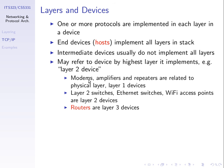A modem dealing with physical signals may be a layer one device. An ethernet switch or Wi-Fi access point dealing with link technologies is a layer two device. A router, which connects different networks together, may be a layer three device. You don't have to remember them at this stage, but you may see this terminology come up when you read websites and documentation.